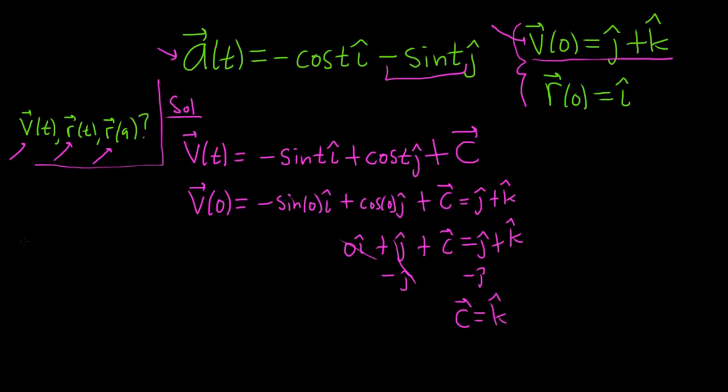Let's go ahead and rewrite our velocity function. So our velocity function is v of t. That's equal to negative sine t, i hat, plus cosine t, j hat. And now we're going to plug back in our c. So it'll be plus k hat. I'm going to put this in a box because that is our first answer.